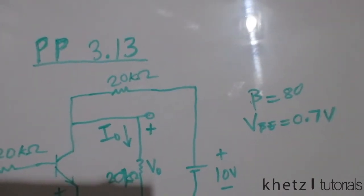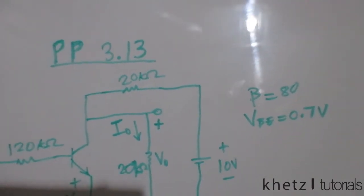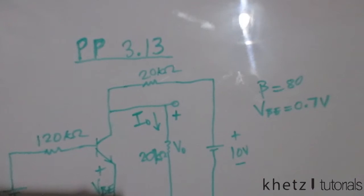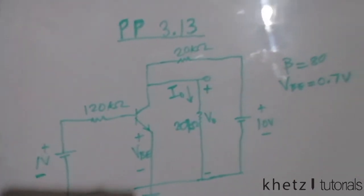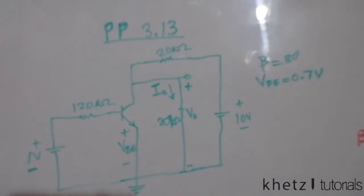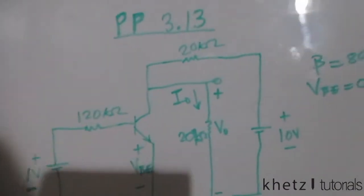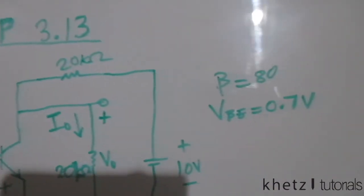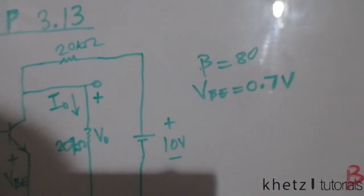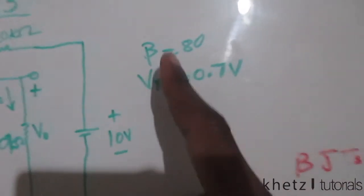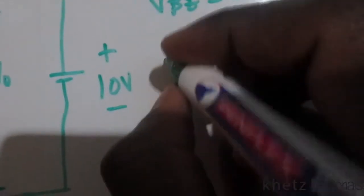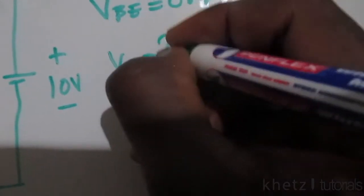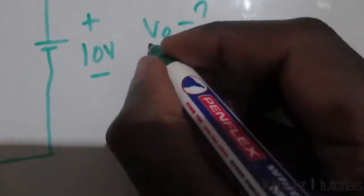Welcome to the tutorials. In this video I'll be covering Practice Problem 3.13 from the fourth edition of Fundamentals of Electric Circuits. We are asked to find Vo and Io, given that beta equals 80 and Vbe equals 0.7.